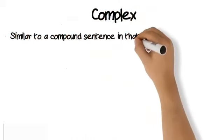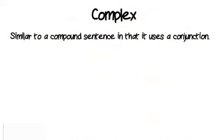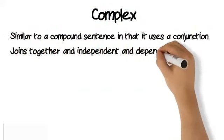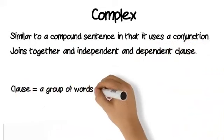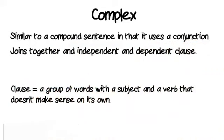The third type of sentence is a complex sentence. It is similar to the compound sentence in that it uses a conjunction, but instead of joining simple sentences, it joins together an independent and dependent clause. A clause is a group of words with a subject and a verb, but it doesn't make sense on its own.